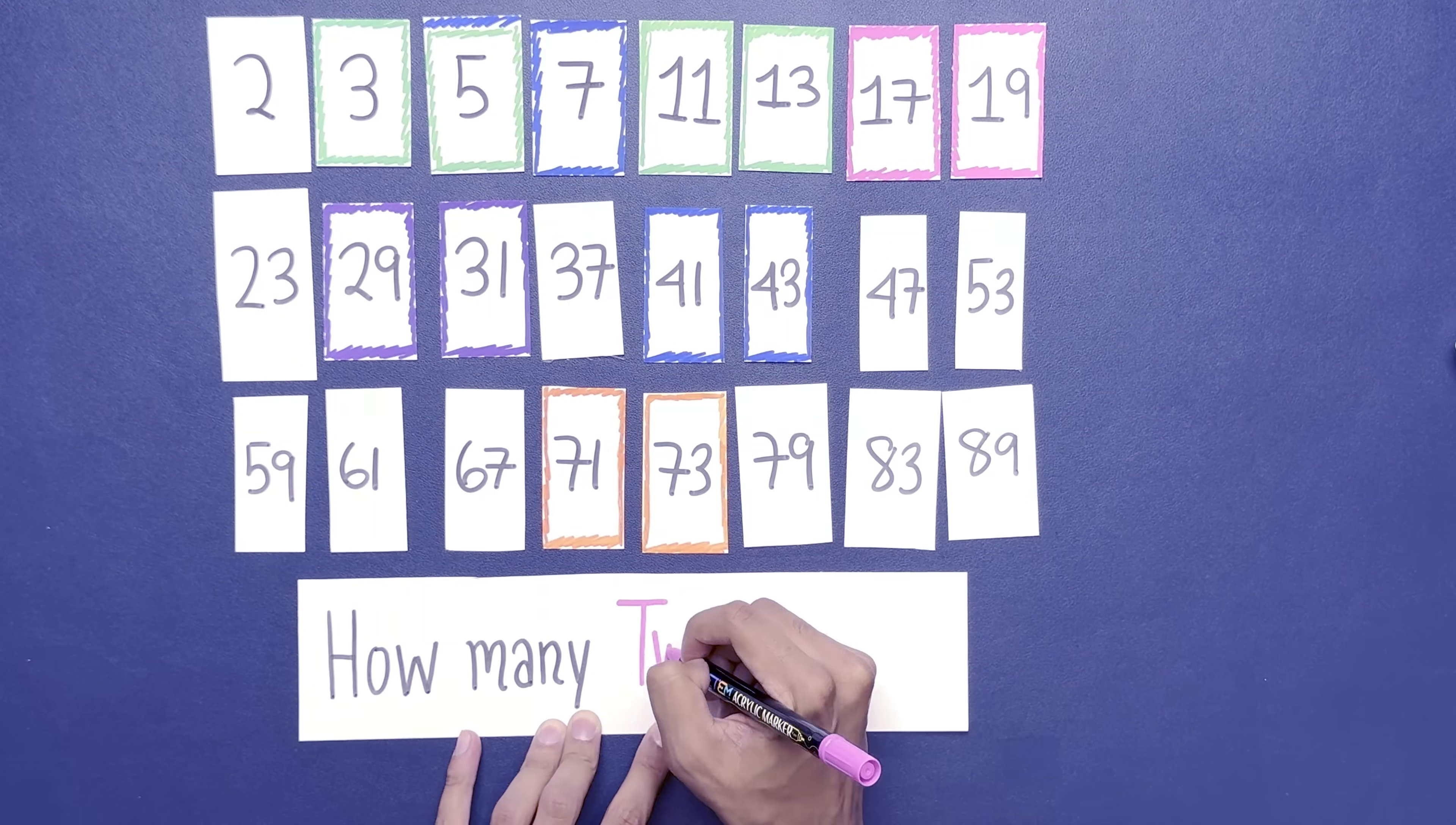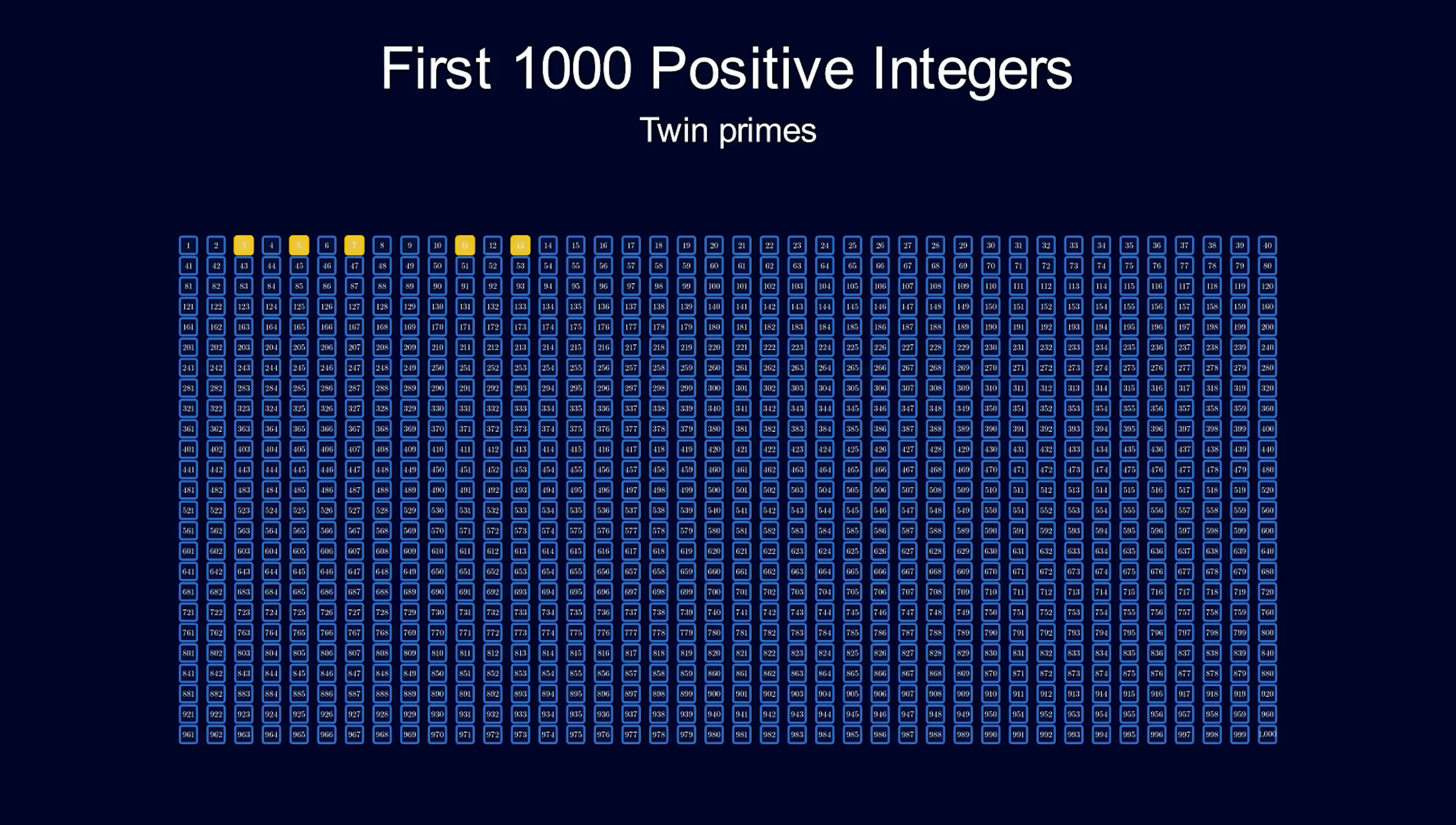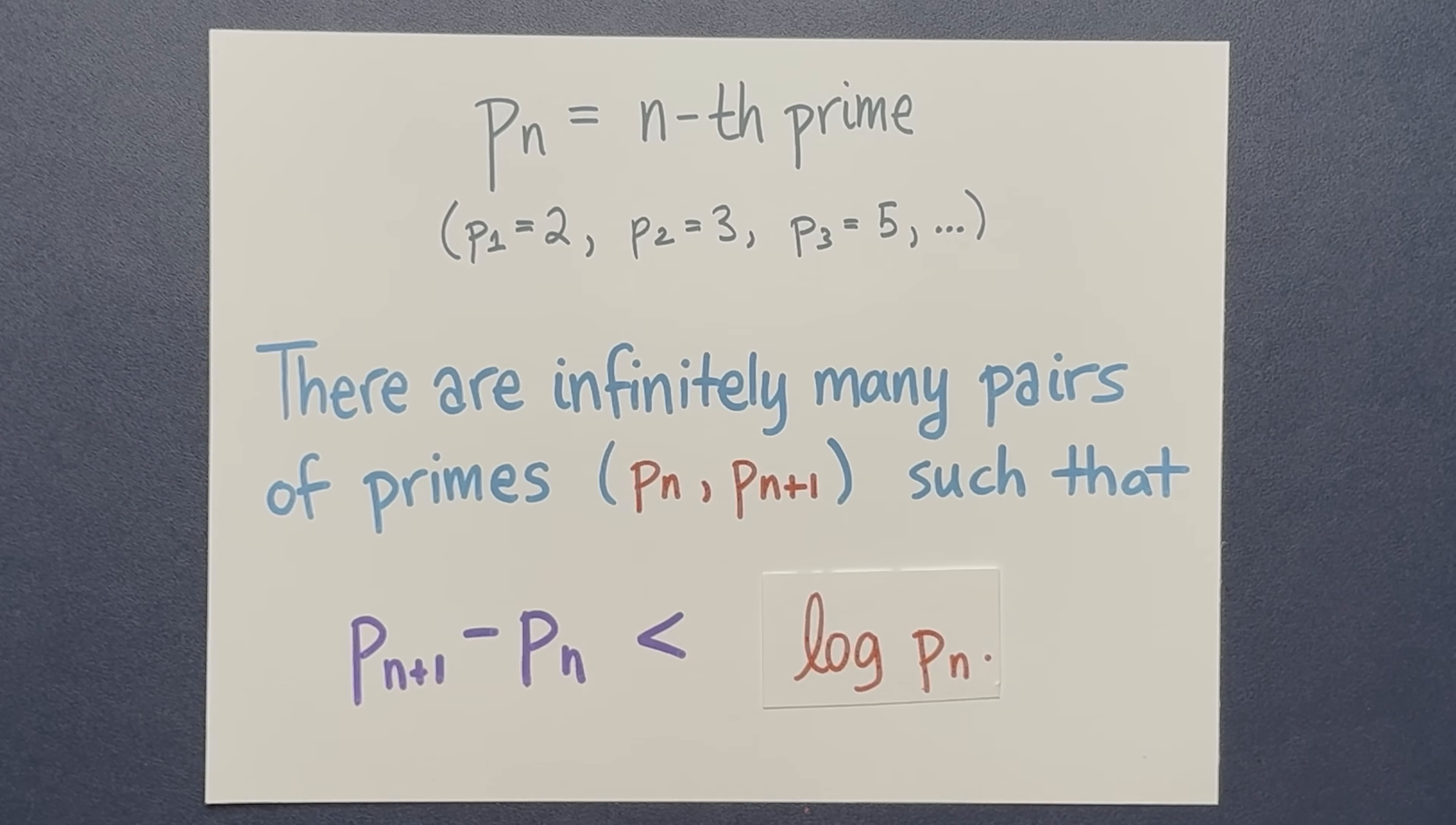This video is about one of the simplest sounding puzzles in mathematics. A problem about prime numbers that even a 10 year old can understand. And yet, it's resisted solution for more than a century.